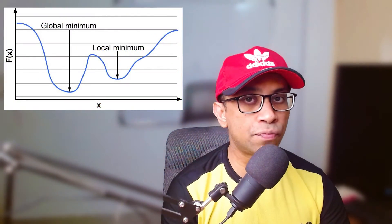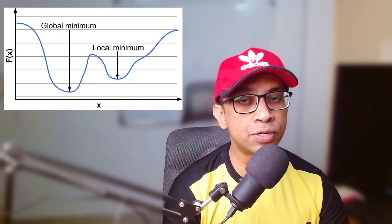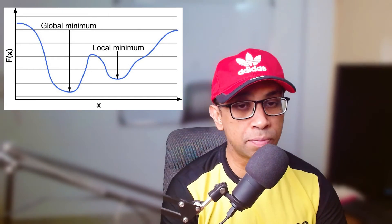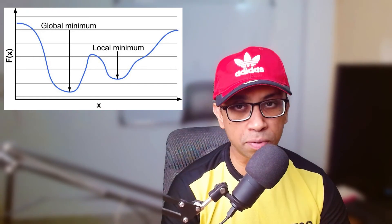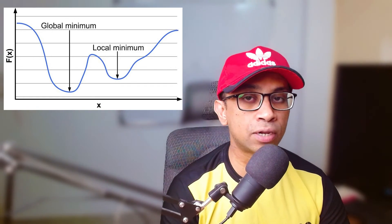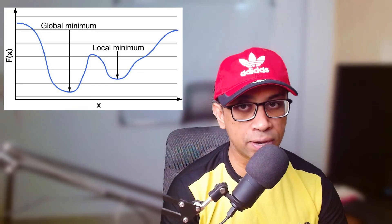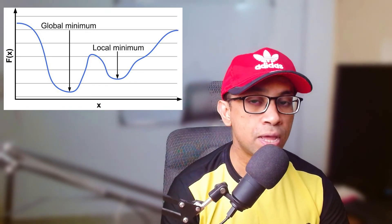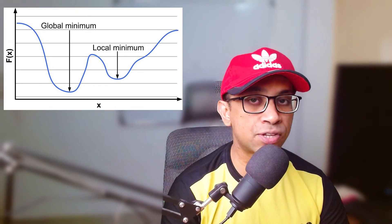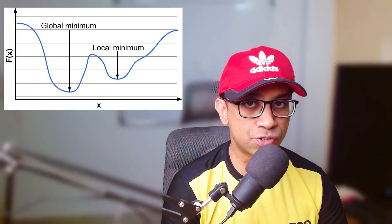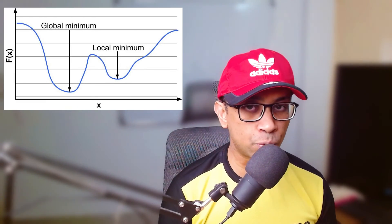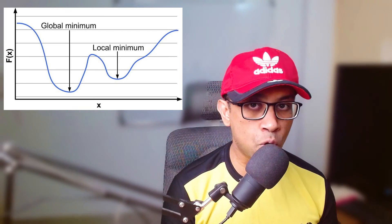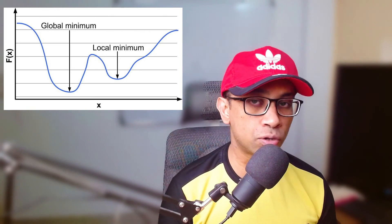Quasi-convex functions that you see here are an interesting case. Any local minimum of a quasi-convex function is also a global minimum, but quasi-convex functions can also have stationary points that are not local minima. Take for example the function f(x) equal to x cube. It's theoretically possible for gradient descent to get stuck on such a stationary point and not progress to a global minima at all.